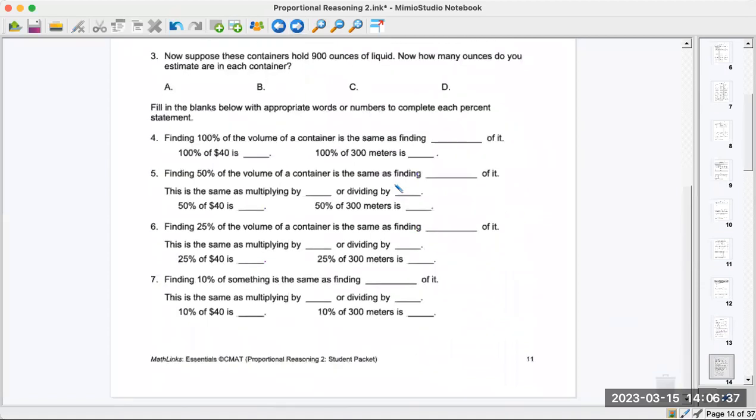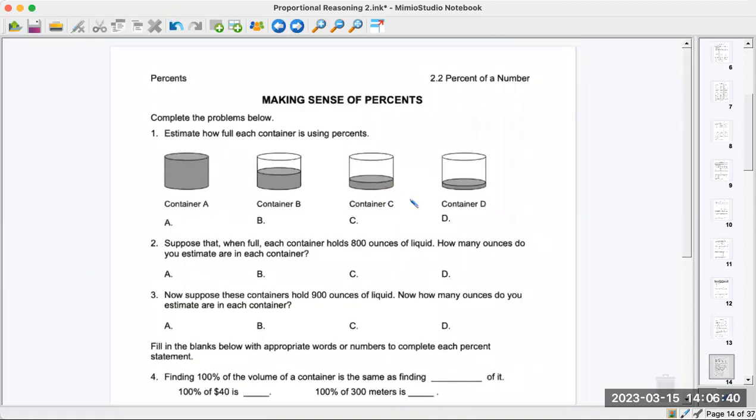We're moving on to page 11. This is also homework. It's something that you can do on your own without me helping you. Estimate how full each container is using percents. This is totally full, so what do you think? 100%, right. This is about half, what do you think? 50% is half. Now you guys decide what percent. It's an estimate.